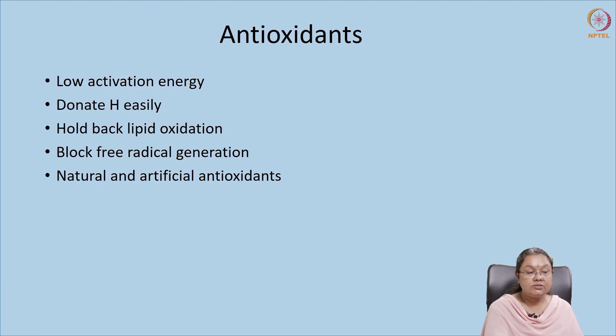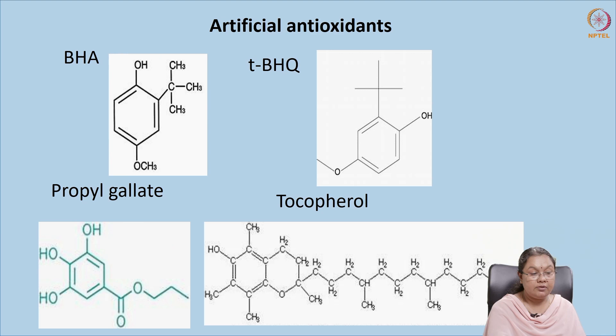Antioxidants lower the activation energy, donate hydrogen (they are proton donors), hold back lipid oxidation, and block the generation of free radicals. They are of different types — natural and artificial antioxidants. The artificial antioxidants include propyl gallate, BHA, and BHQ. The typical structure of antioxidants helps in preventing oxidation.